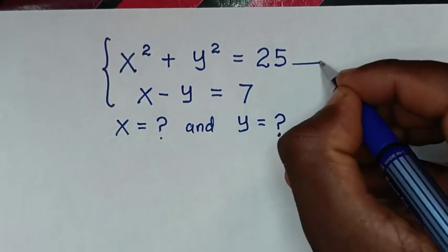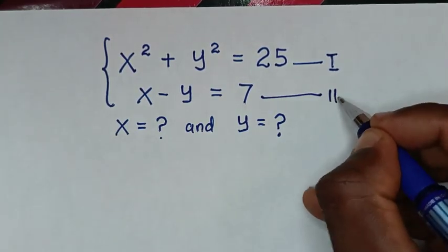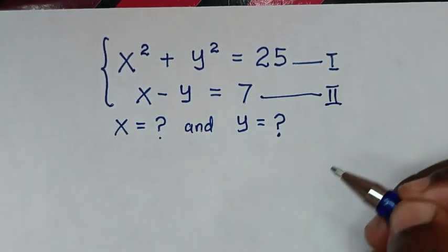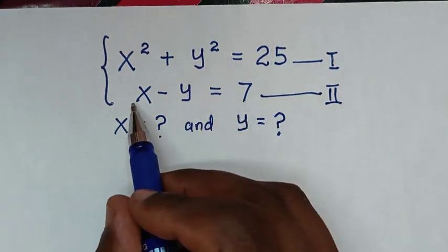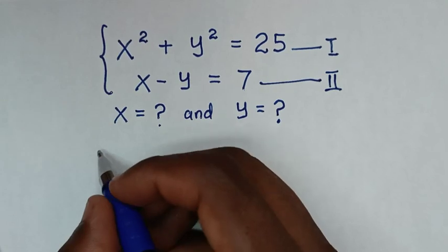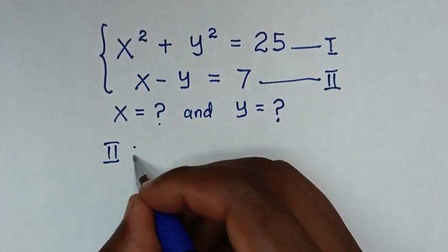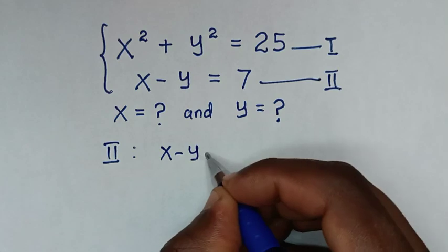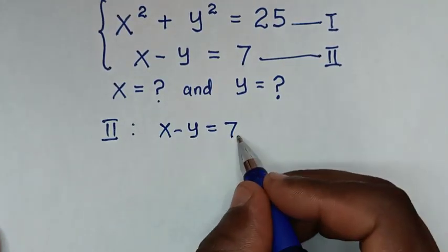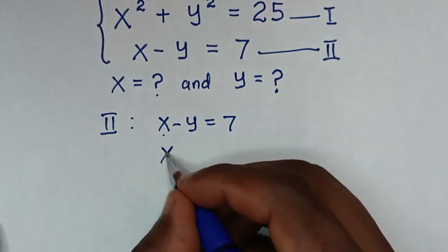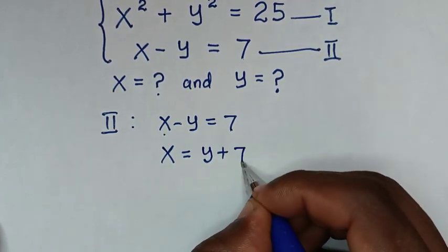We write the first as equation 1 and the second as equation 2. Starting from equation 2, which is the simplest equation — x minus y equals 7 — we take negative y to the right side, so x equals y plus 7.